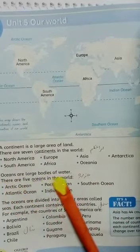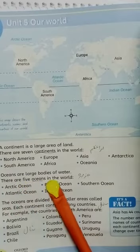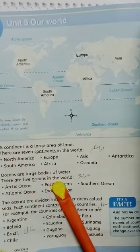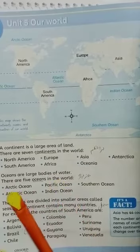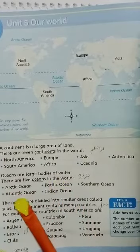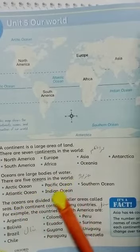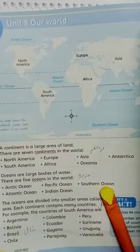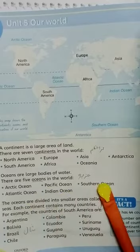There are also large bodies of water. There are five oceans in the world: the Arctic Ocean, Atlantic Ocean, Pacific Ocean, Indian Ocean, and also the Southern Ocean.